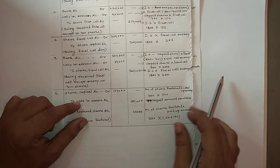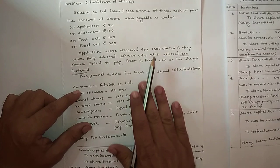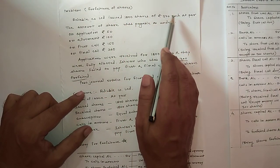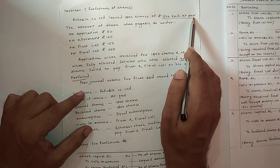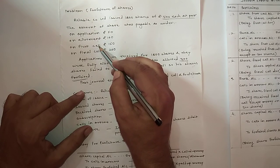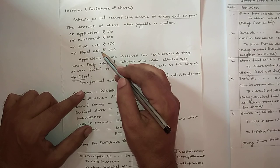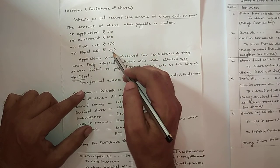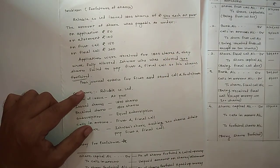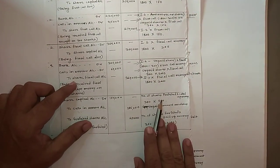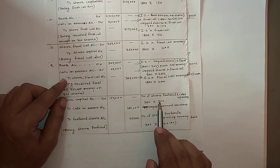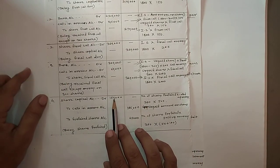The called-up money is derived from the share face value. The company issued 1800 shares of rupees 500 each at par, and all installments — application, allotment, first call, final call — are called by the company, and their addition equals the face value of rupees 500. So called-up money is rupees 500. Number of shares forfeited 300, multiplied by called-up money 500, gives rupees 1,50,000 for Share Capital Account debit.